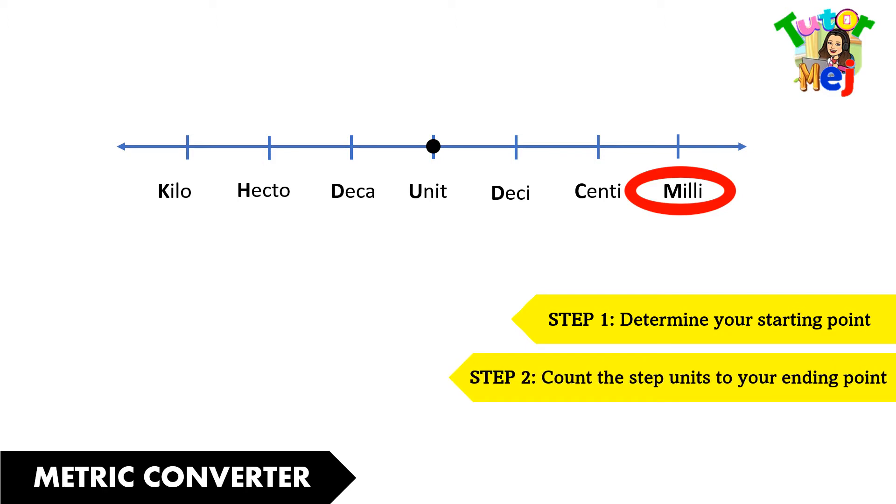Next, count the step units to your ending point. We are going to move to the right three units. And lastly, move the decimal point to your ending point.